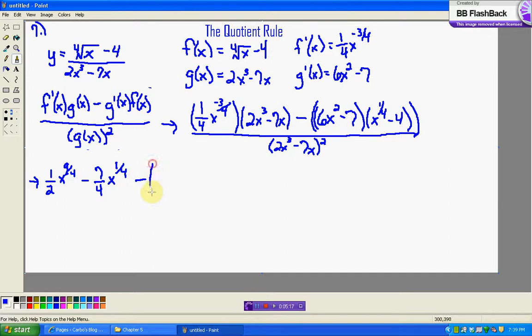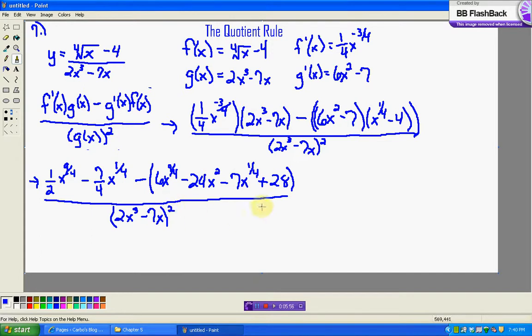Minus. I'm going to keep that parenthesis. Do some multiplication here. 6x squared times x to the fourth. This is 8 over 4. 8 over 4 plus 1 over 4 is 9 over 4. So, I get 6x to the 9 over 4. Then, minus 24x squared. If I'm going too fast, I'm just foiling. Minus 7x to the 1 fourth plus 28. And, all divided by 2x cubed minus 7x squared.